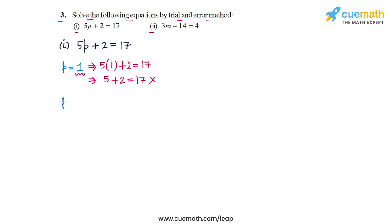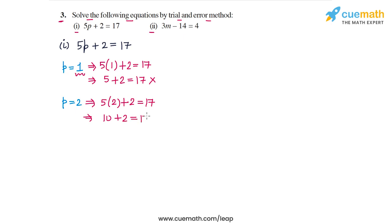Now let's take P equal to 2. For P equal to 2, on the LHS we get 5 times 2 plus 2, and on the RHS we get 17. 5 times 2 is 10, so we get 10 plus 2 equal to 17. This does not work because 10 plus 2 is 12 and not 17. So P equal to 2 also does not work.